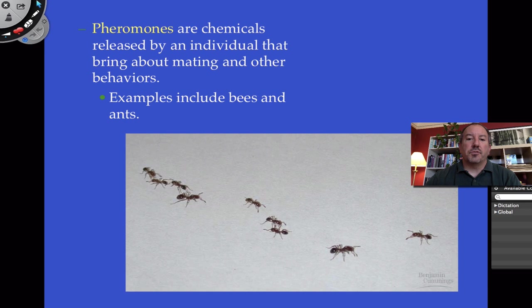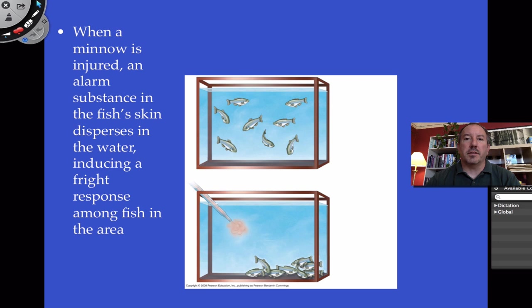There's so much coolness with ants. If you really like ants, then you'll like one of the great biologists of all time, Edward O. Wilson, who studied ants his whole life. Chemical messages that are secreted can send information and communicate. Even fish can do this — for example, minnows.